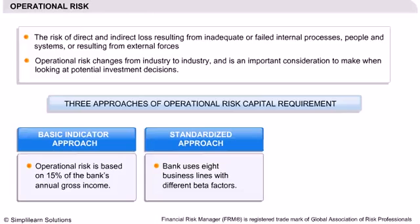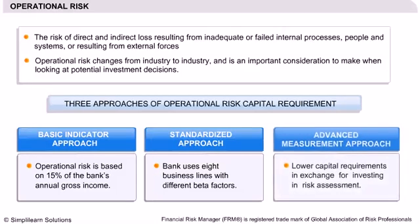The second approach is the Standardised Approach, wherein the bank uses eight business lines with different beta factors to calculate the capital charge. With this approach, the beta factor of each business line is multiplied by the annual gross income amount over a three-year period. The third approach is the Advanced Measurement Approach, which will be discussed in the next slide.